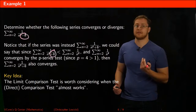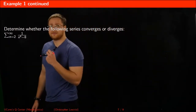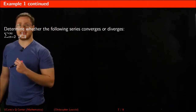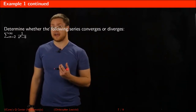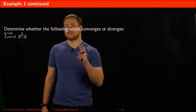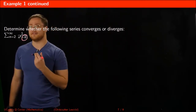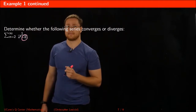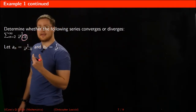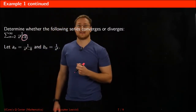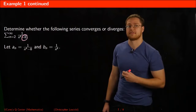The way I think about the limit comparison test is: use it whenever the direct comparison test almost works. The limit comparison test requires two sequences. Set your given sequence equal to aₙ, then construct bₙ as a simplified version of your given sequence — usually by removing any constants or other terms that do not affect the n behavior. Here, I set aₙ equal to my given sequence and chose bₙ to be 1 divided by n⁴, which we couldn't use for the direct comparison test but can use here.